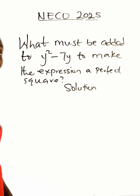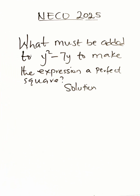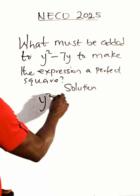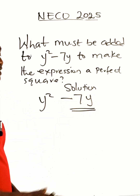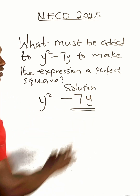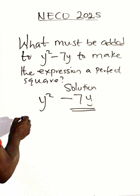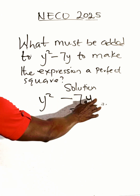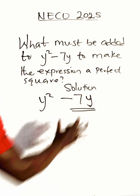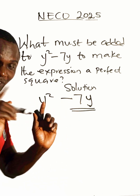What must be added to y squared minus 7y to make the expression a perfect square? Now, what you concentrate on is this second term. First of all, we need to know the coefficient of y here — not the coefficient of y squared, but y. The coefficient of y is minus 7.